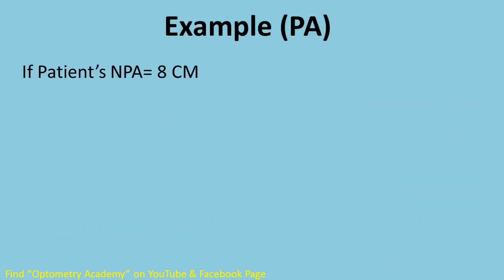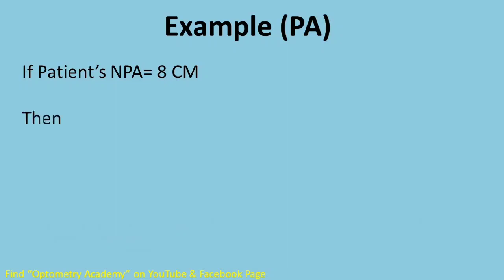Example — pull-away method: if the patient's NPA is 8 centimeters, then the amplitude of accommodation equals 100 divided by 8, which equals 12.5 diopters.